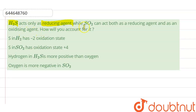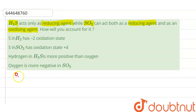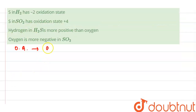Our question is: H2S acts only as a reducing agent, while sulfur dioxide can act both as a reducing agent and as an oxidizing agent. How will you account for it? First, let us understand what an oxidizing agent is. An oxidizing agent gains electrons and is reduced in a chemical reaction.